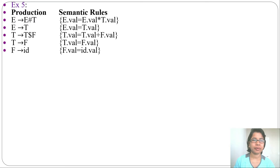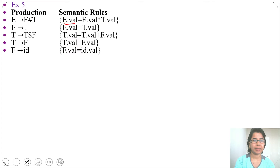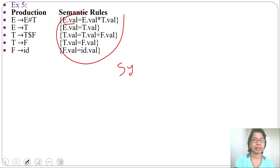First we need to identify which type of STT it is — whether it is S-attributed or L-attributed. Here the parent attribute depends on its child attributes, so it is a synthesized attribute. Plus, semantic rules are written at the right end of the production. So it is S-attributed.